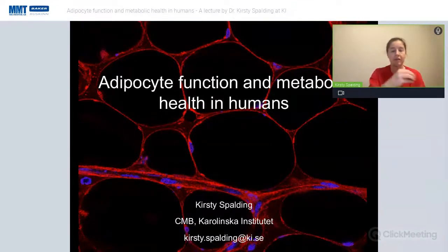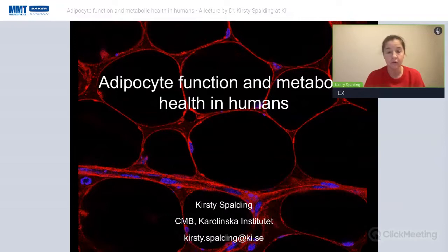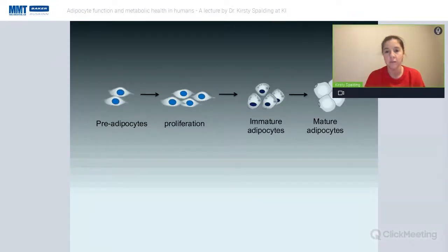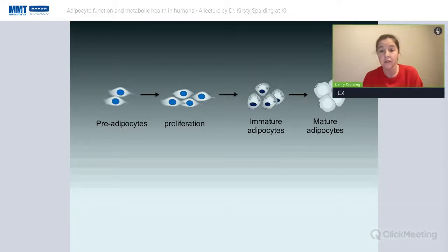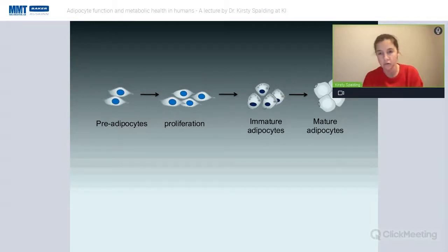In obesity, we tend to see an increase in the size of fat cells, which can also be accompanied by hyperplasia — a recruitment of new fat cells. We've shown in previous work that we actually make around 10% new fat cells every year. The dogma is that tissue-resident progenitor pre-adipocytes proliferate and differentiate as needed, terminally exiting cell cycle to become mature fat cells that are no longer active in cell cycle.